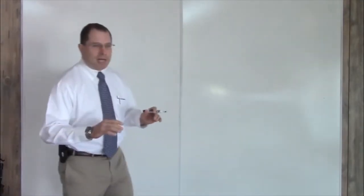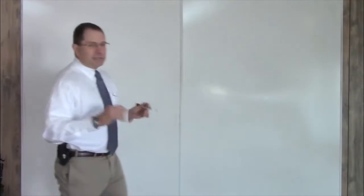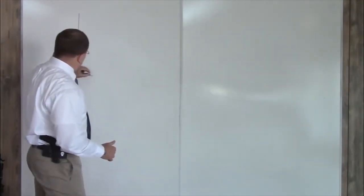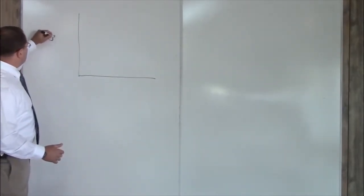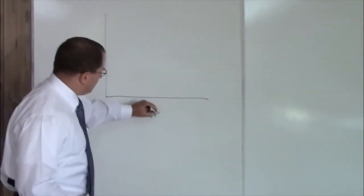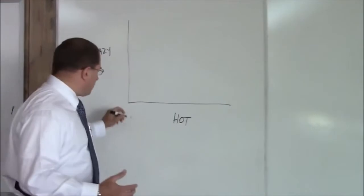So this is the Universal Hot Crazy Matrix. It's everything a young man needs to know about women. I've developed this on my own over 46 years of living on the earth. This is how it works. You have your crazy axis and your hot axis. Hot is as usual measured from zero to ten. We're all familiar with that.